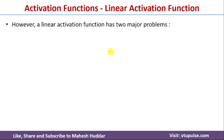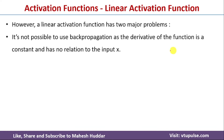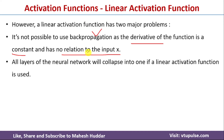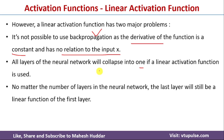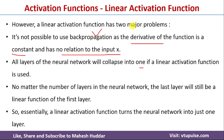The limitations of the linear activation function: if you take the derivative of f(x) = x, f'(x) = 1, which is a constant. Because it is constant and has no relation with respect to x, we cannot use the linear activation function with backpropagation. Additionally, all layers of a neural network will collapse into one — if you use the linear activation function with any number of layers, it essentially becomes a single-layer neural network.